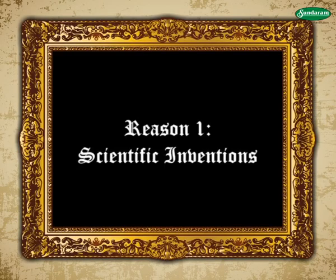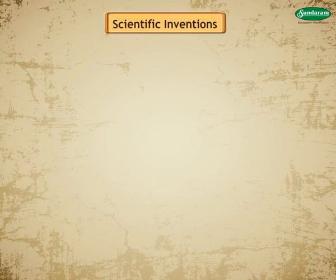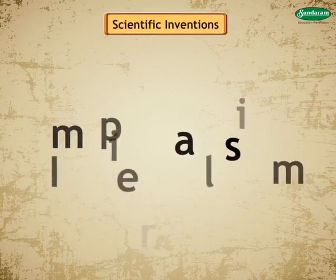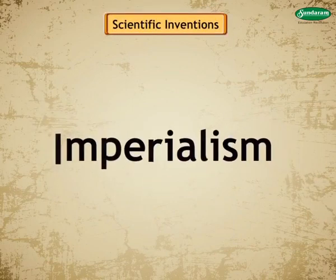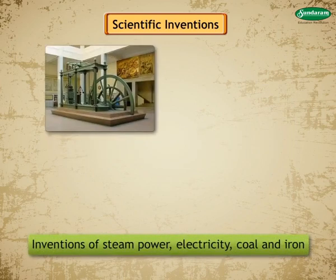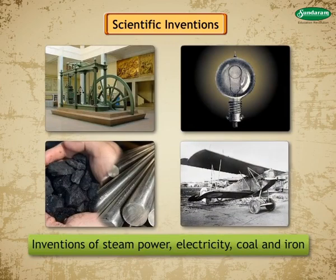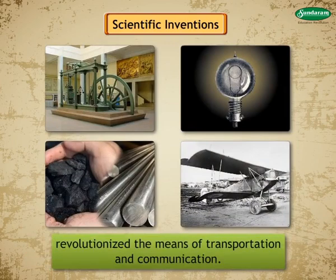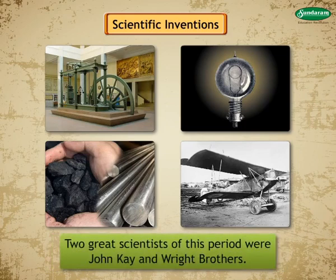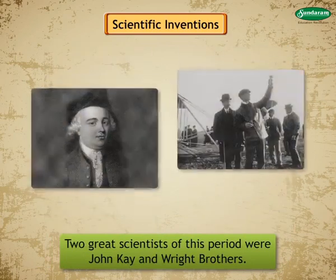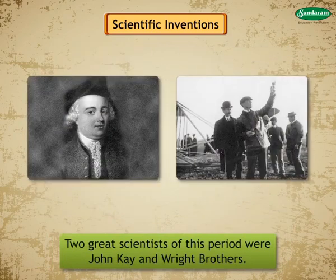Reason 1 — Scientific Inventions: Imperialism gained momentum due to revolutionary inventions in transportation and communication, like steam power, electricity, coal and iron, and modern weapons, which fueled monstrous ambition in human beings. Two great scientists of this period were John K. and the Wright brothers.